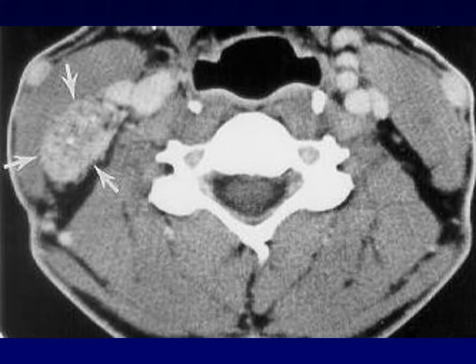Sometimes papillary thyroid carcinoma metastases are solid and enhancing, and sometimes they have areas of calcification — they're not all cystic. Often they are cystic with a mural nodule. So the radiologic appearance of these metastases is quite variable.